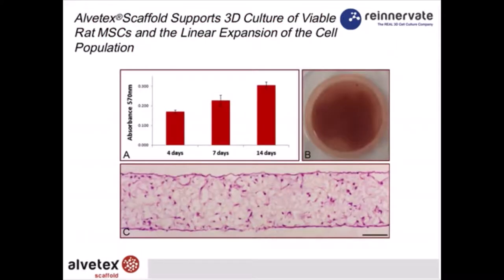This first slide shows three panels — A, B, and C. Panel A shows a growth curve of mesenchymal stem cells at 4, 7, and 14 days. These experiments were performed in a well insert in a six-well plate using an MTT cell viability assay to examine expansion of the cell population. The data show linear growth over the first two weeks. However, confluency will be reached in Alvitex — it really depends on the cell type, with some cells filling the entire scaffold within one to two weeks.